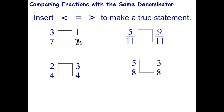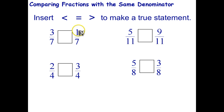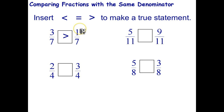Let's think of them as pizzas. If I divide a pizza into seven equal parts and I get three of them, that's obviously going to be more pizza than if I divide a pizza into seven parts and only get one of them. So three-sevenths is greater than one-seventh. In general, if the denominators are the same, whichever numerator is bigger gives you a larger number.